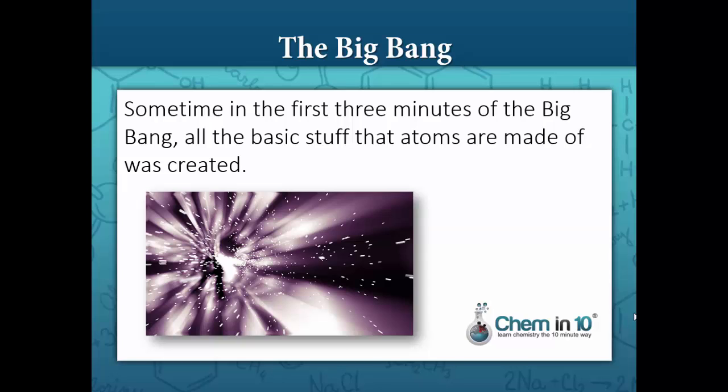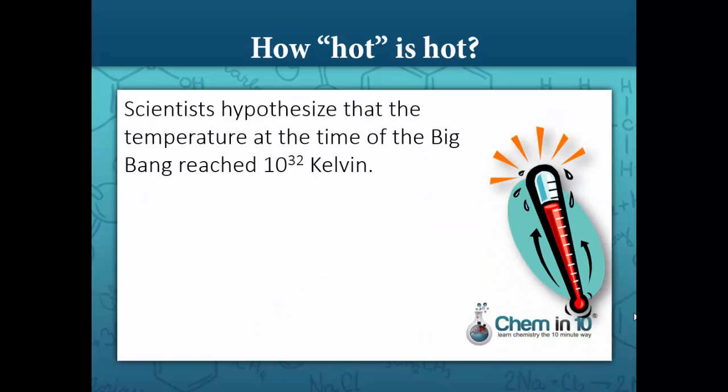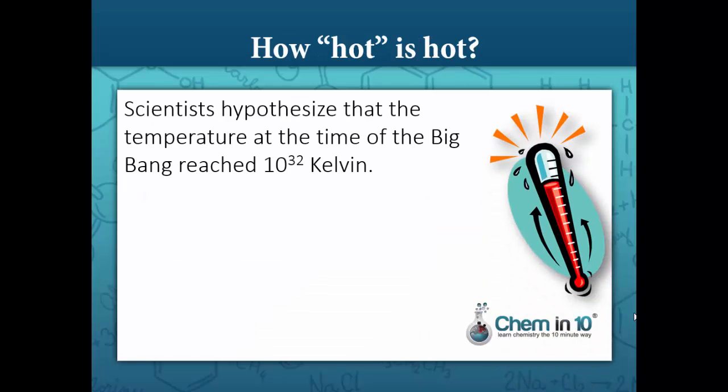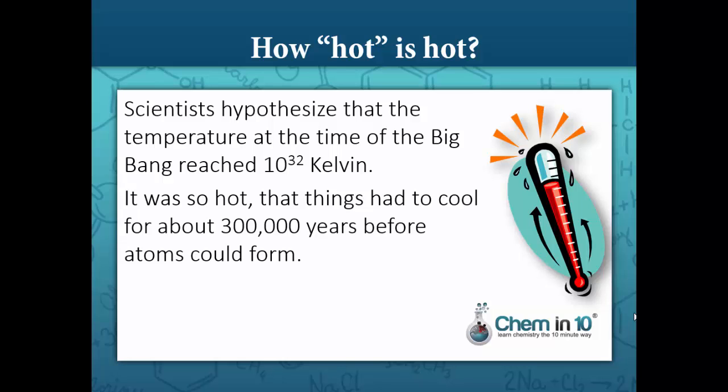Sometime in the first three minutes of the Big Bang, all the basic stuff that atoms are made of was created. Scientists hypothesized that the temperature at the time of the Big Bang reached 10 to the 32 Kelvin. It was so hot that things had to cool for about 300,000 years before atoms could form.